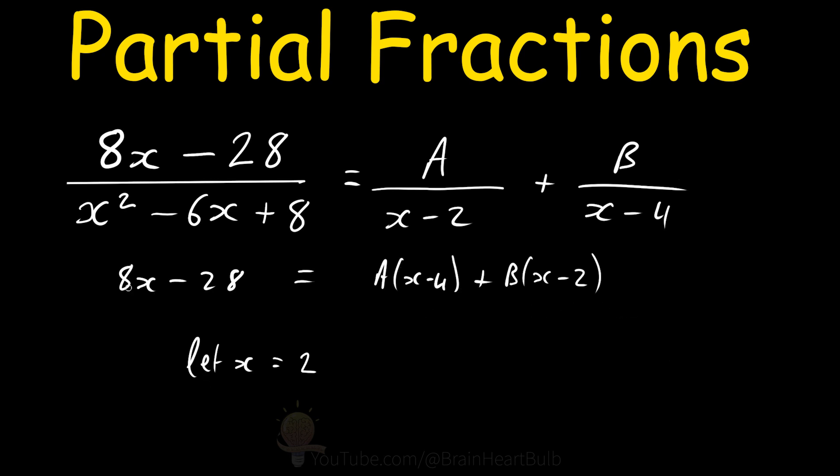we know that 2 times 8 is 16 minus 28, which is equal to A multiplied by 2 minus 4. So that means we've got minus 12 on the left-hand side and minus 2A on the right-hand side. So A is equal to 6.